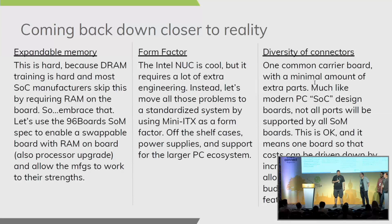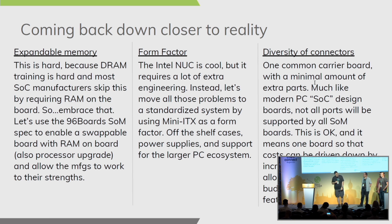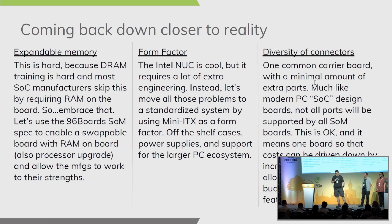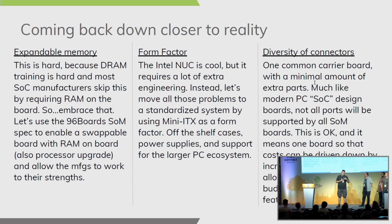The big one on the top right is probably the most important. There are issues with those requirements — expandable memory is hard, DRAM training is hard, memory controllers are hard. So what if we embrace that as an advantage instead of reinventing the wheel and take advantage of the 96Boards SOM specification for compute, making it so you can drop in different modules? Want a new processor? Pop the old one off, pop the new one on. Different memory configurations? Great. For form factor, instead of trying to match a semi-proprietary system from a large company, we embrace the PC ecosystem — make it mini-ITX — and go for diversity of connectors. One carrier board, any SOM you want.